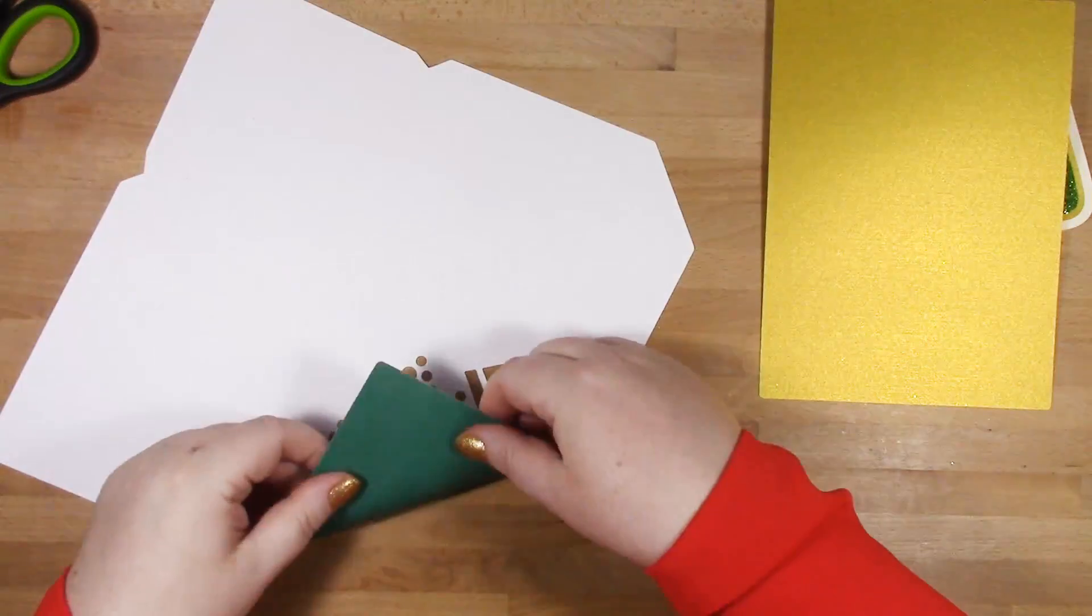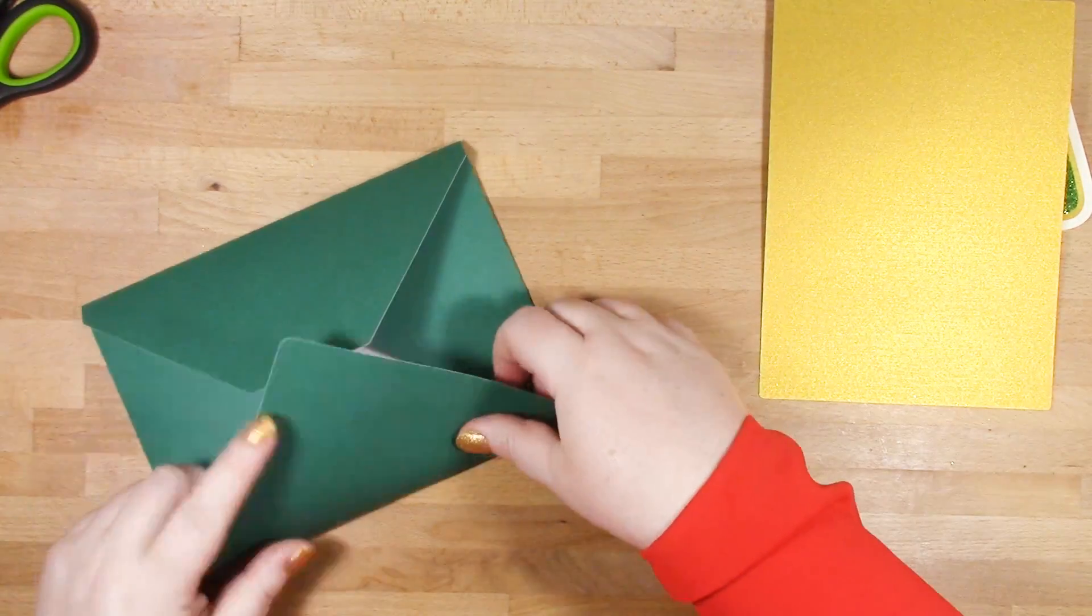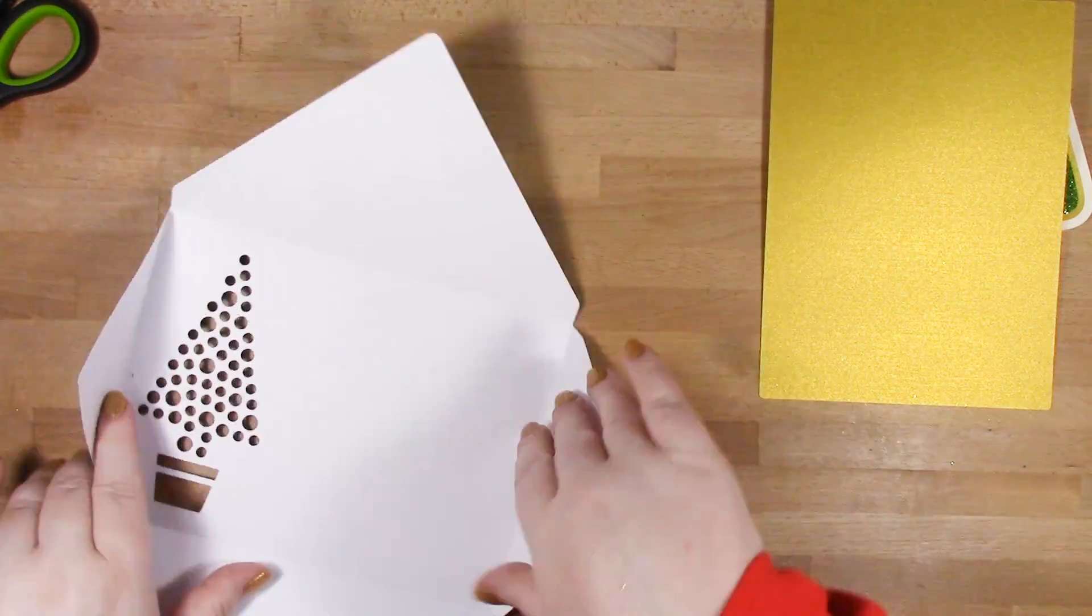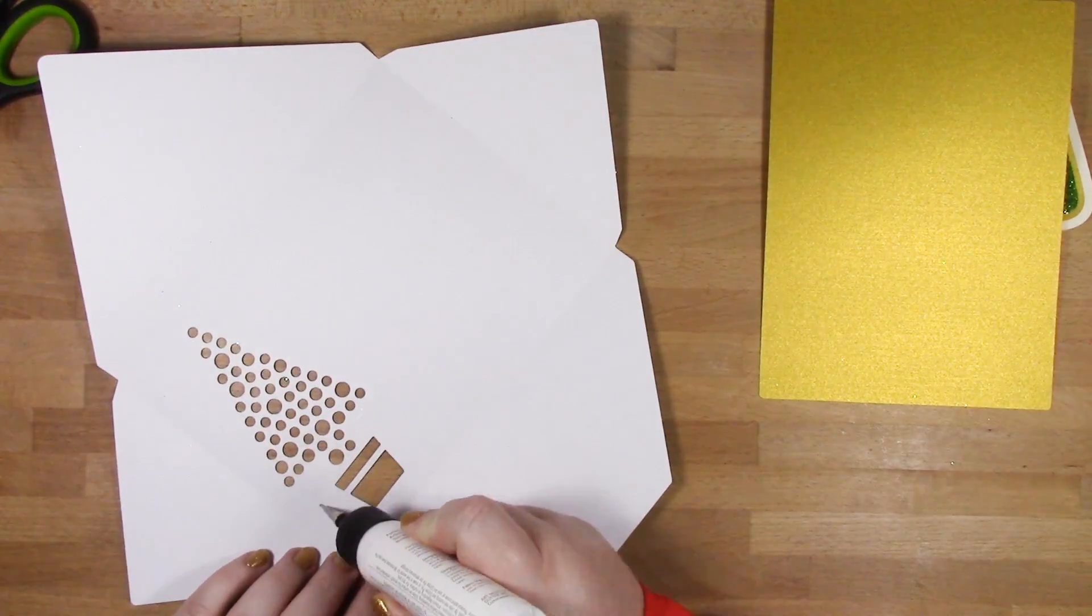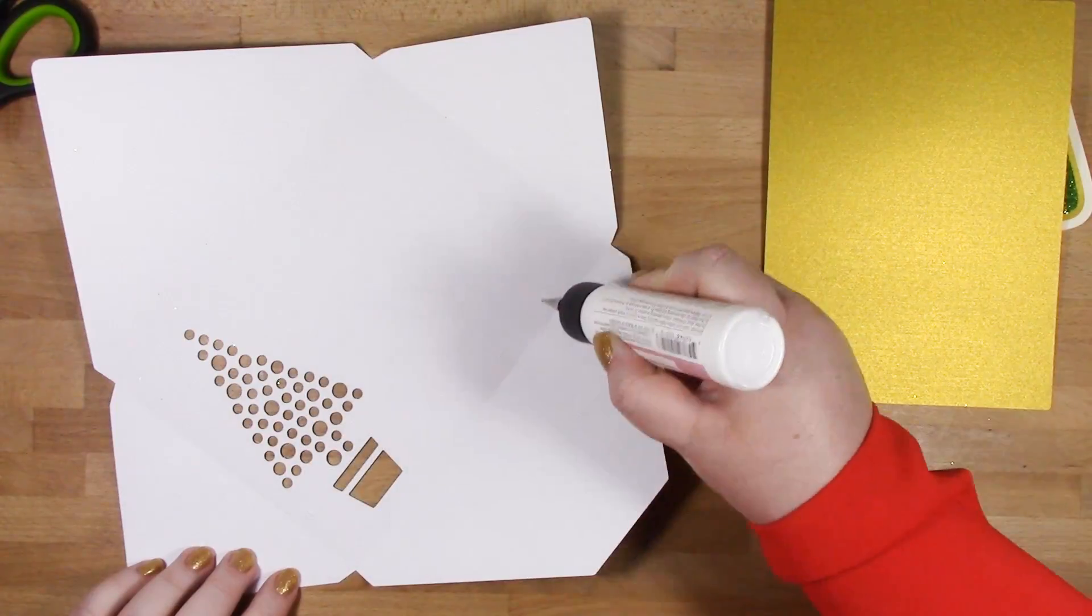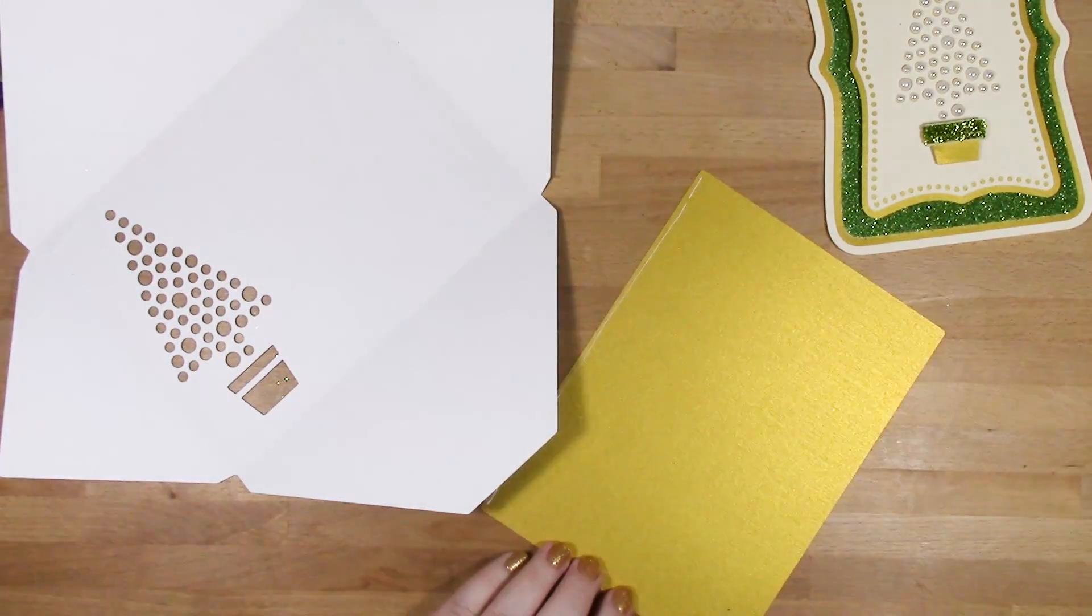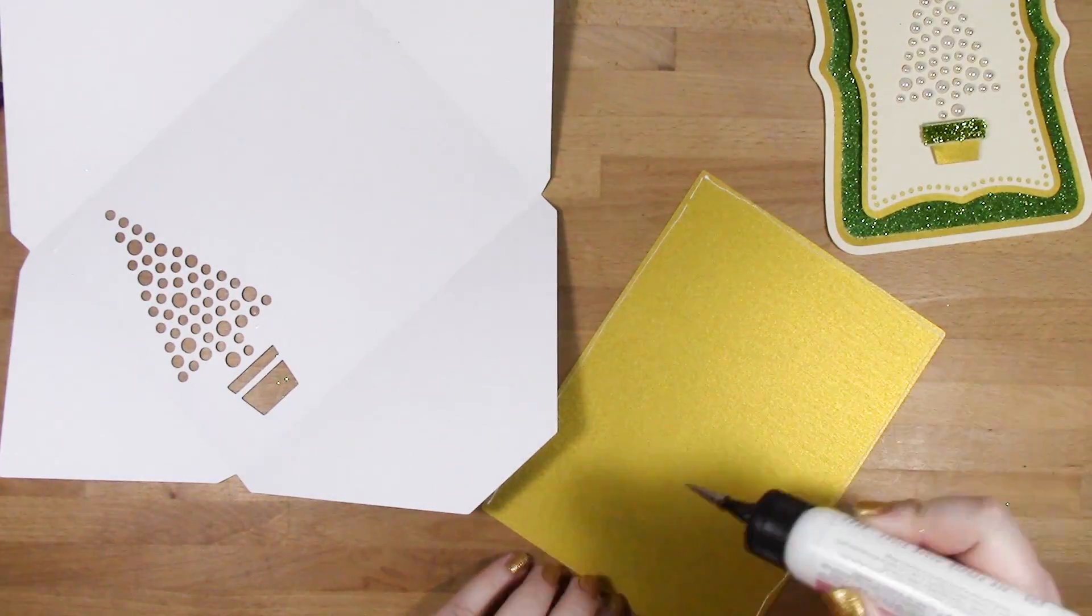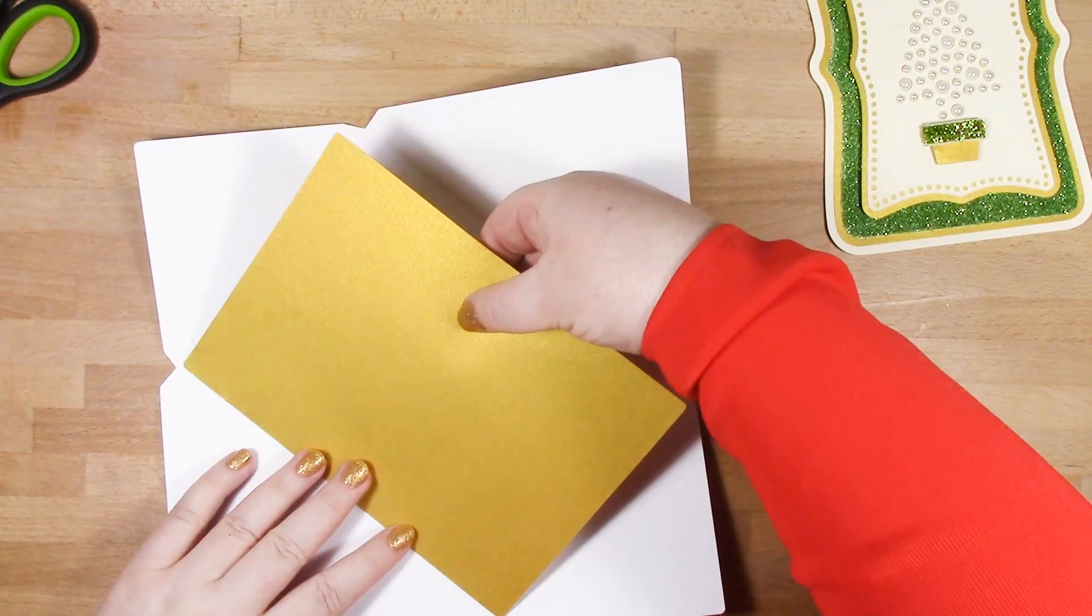The envelope has the similar tree design on the front. So first of all, we're going to fold along all the score lines just so we can see where those score lines are, to see where we need to place our insert, our liner, into our envelope. And I'm just adding a little bit of glue, nothing too heavy, just a light layer of glue around the tree area. And then I'm just going to put one layer around the outside edge of my liner here. And I'm using the same gold card that I used in the backing layers of my card itself, so it all kind of coordinates.